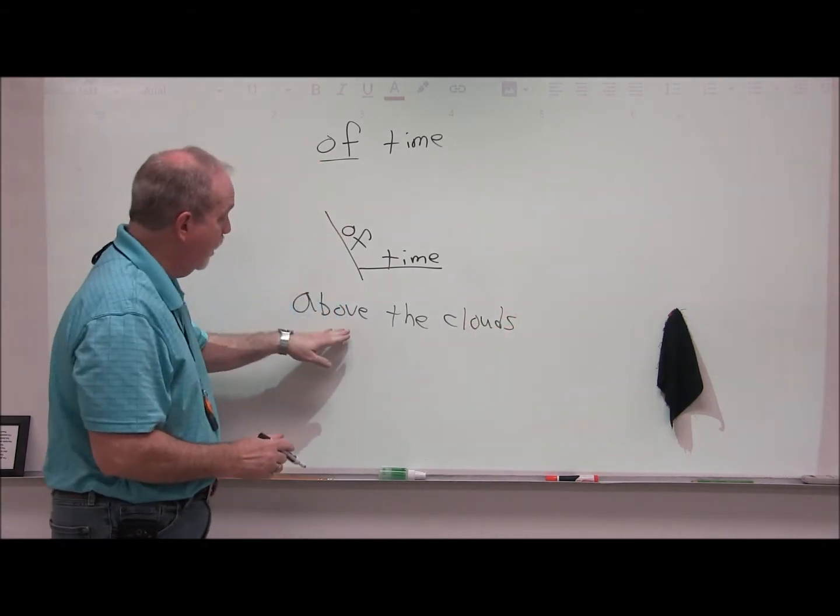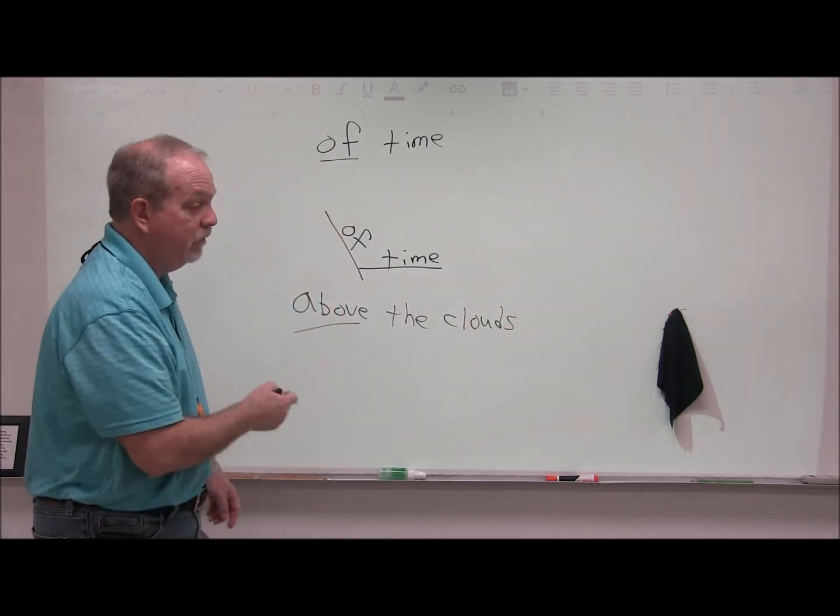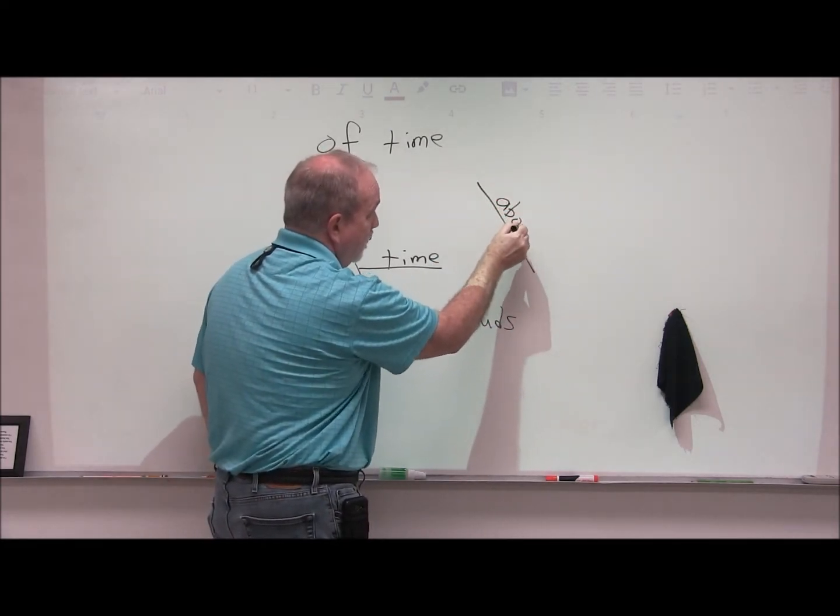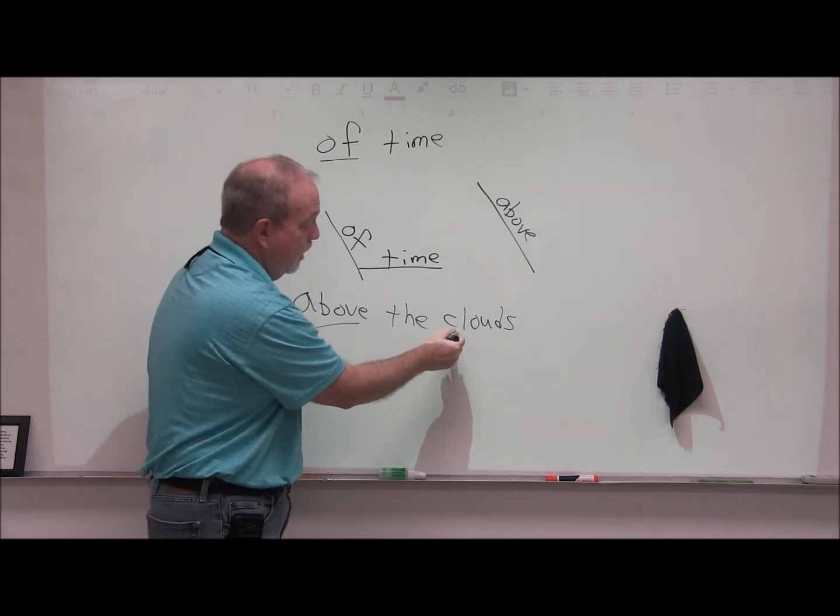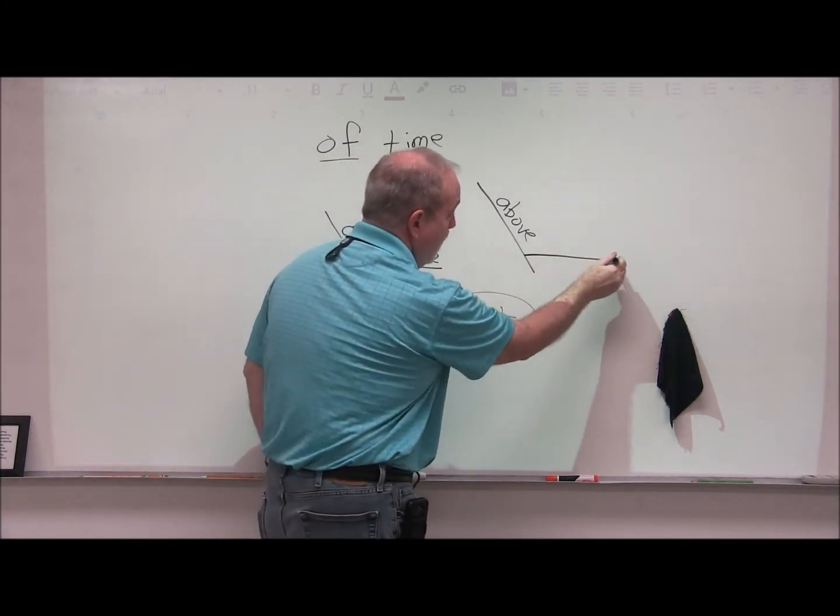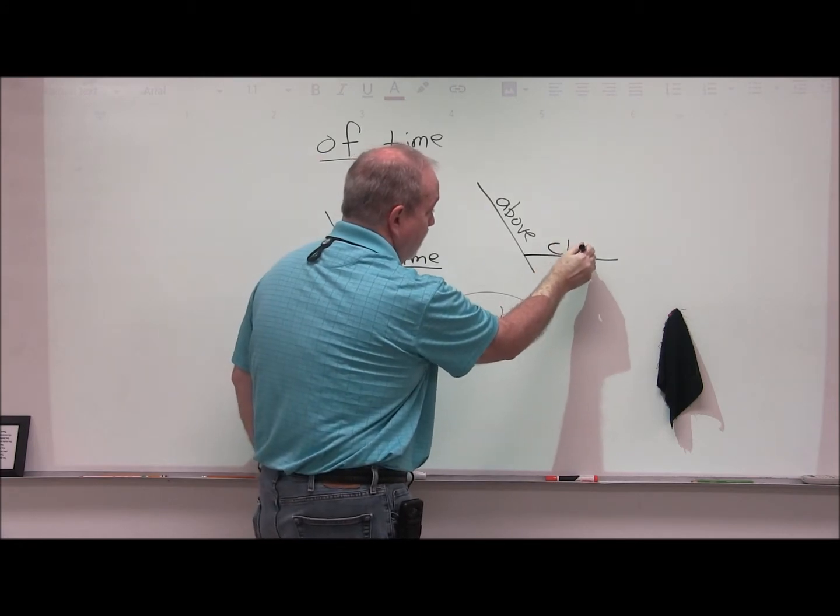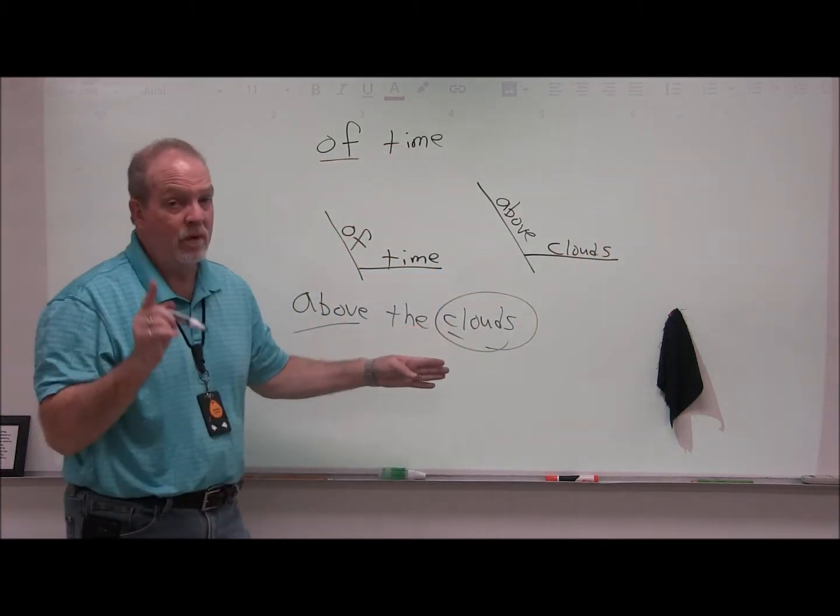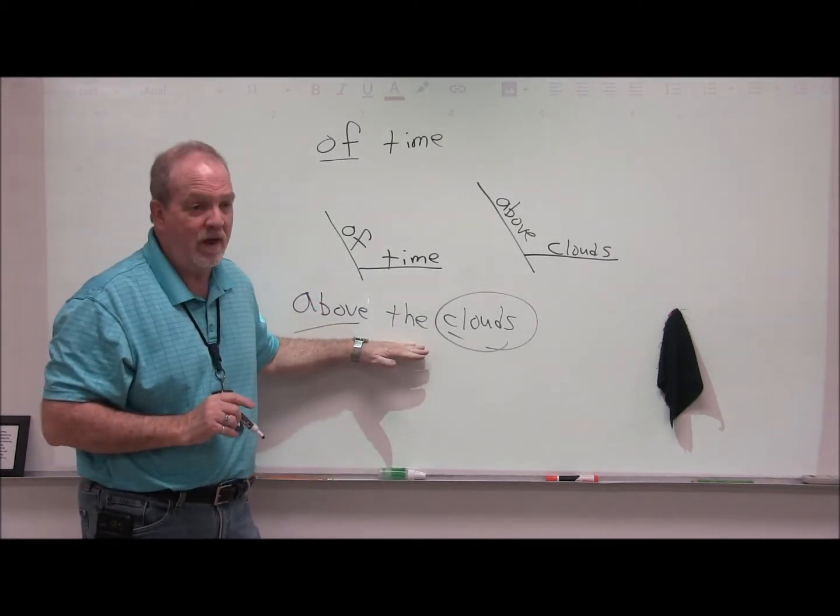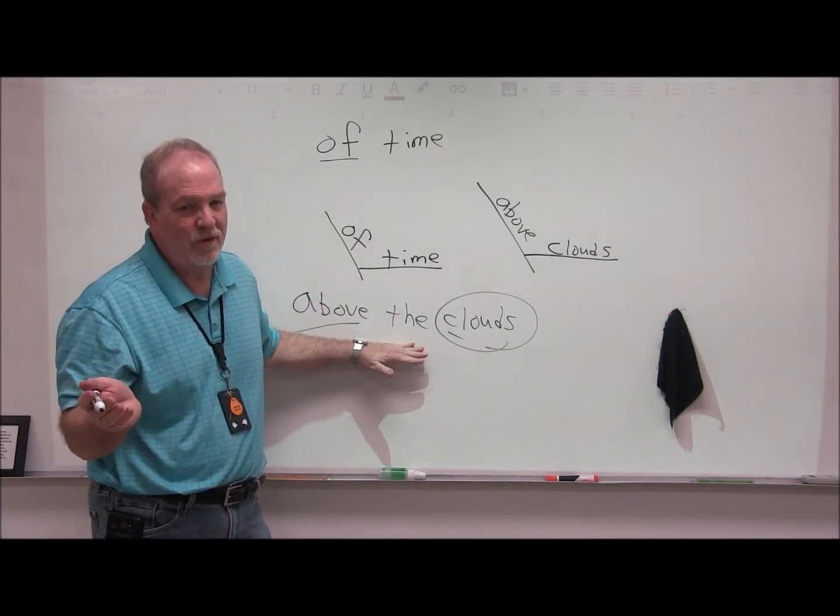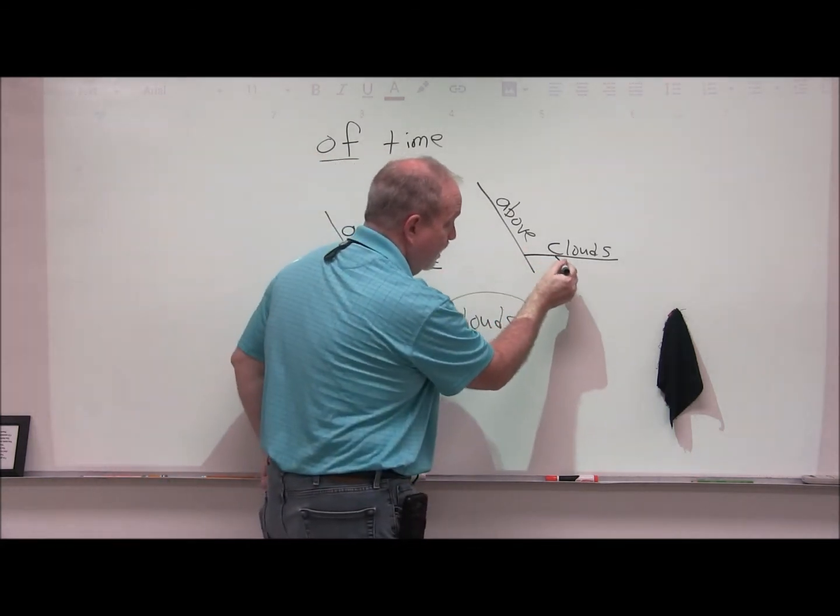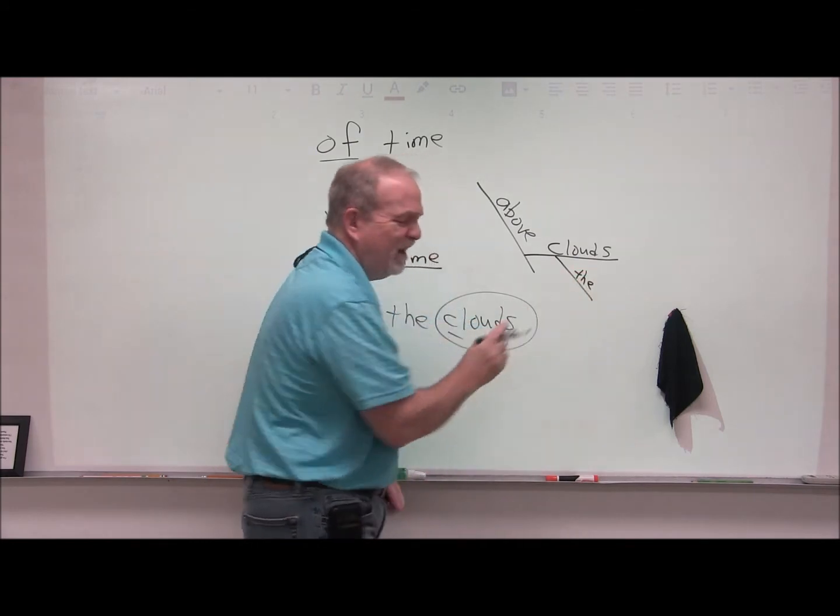Alright? So above is your preposition. So we're going to put it like so. The noun, that's the object of the preposition, is clouds. So we're going to put it on the noun line. Now, remember, you have to use every single word. We haven't used the. Come on, this is basic stuff. You guys remember this. What kind of clouds? The clouds. So the, even though it's technically an article, we're using it as an adjective because it's telling you what kind of clouds.